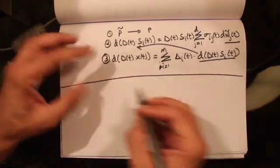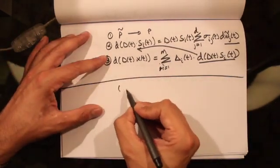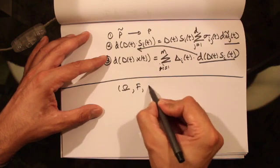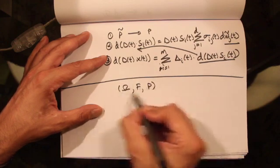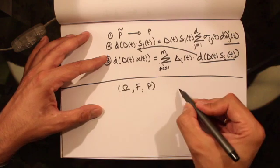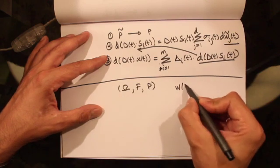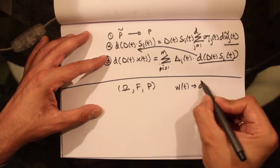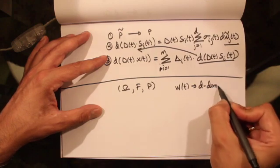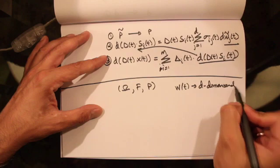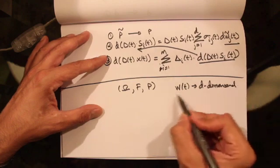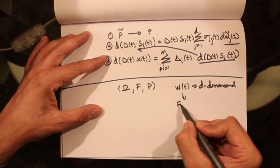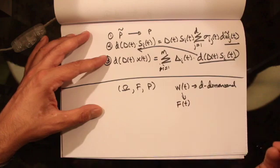Let's assume that we have a probability space given by our sample space, a sigma-algebra, and a probability measure. Defined on this probability space we have a D-dimensional Brownian motion given by W(T). This Brownian motion generates a filtration given by F(T).